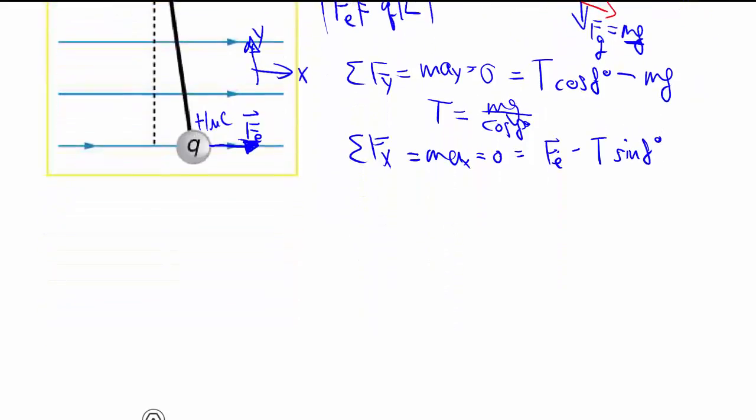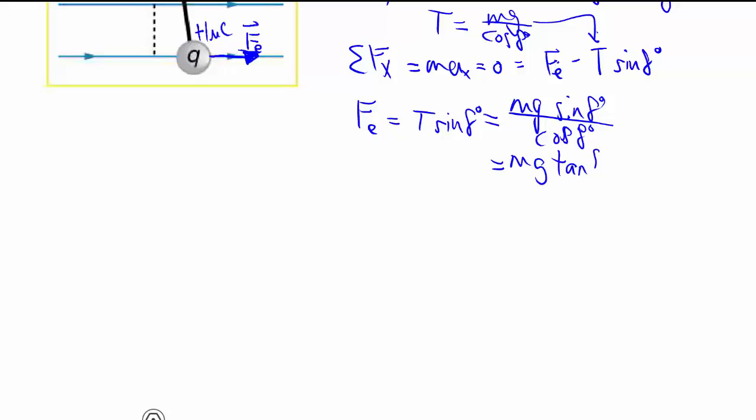Subbing in my T, we know that Fe is equal to T sine 8 degrees, which is M-G, sine of 8 degrees over cosine of 8 degrees. If you want, you can change this to tangent, not super necessary, it's just more numbers you punch in the calculator, and that's equal to Fe.